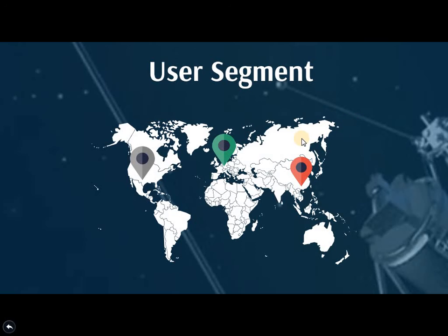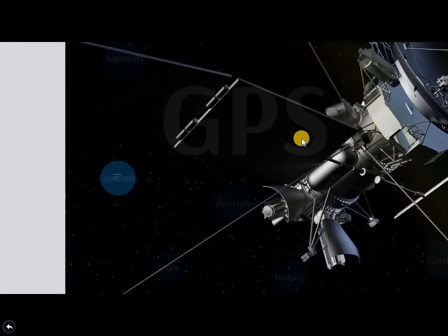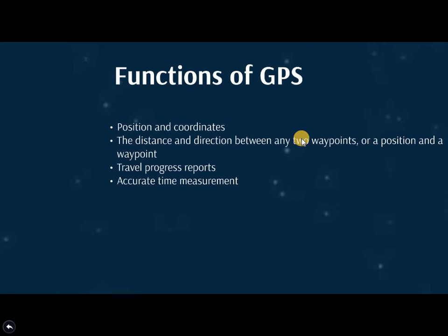Now we will look at the functions of the GPS. A vehicle, individual, or aircraft equipped with a GPS receiver is provided with information about position and coordinates — that is, latitude and longitude. It also provides the distance or direction between any two waypoints, or between a position and a waypoint. It gives travel progress reports — for example, how much travel has been completed and how much time and distance remain to the destination. It is also used for accurate time measurement.